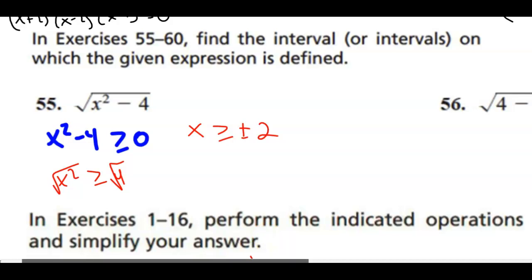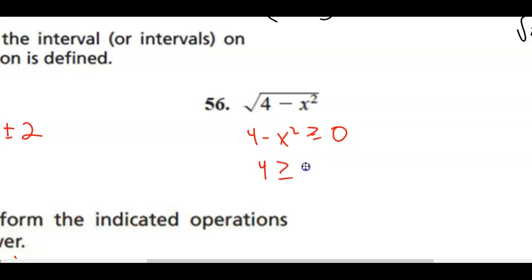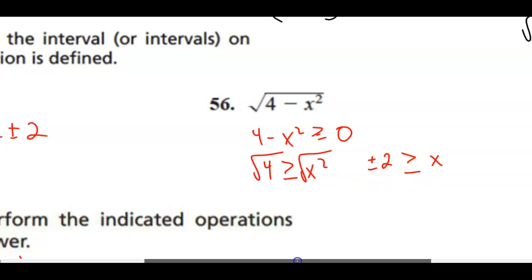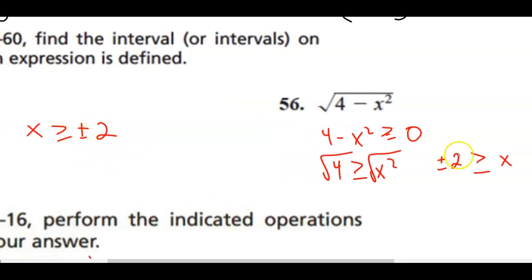For the next domain problem, take the binomial under the radical and set it greater than or equal to zero. Adding x squared to both sides gives 4 is greater than or equal to x squared. Taking the square root of both sides: plus or minus 2 is greater than or equal to x. So x is less than or equal to 2 and x is greater than or equal to negative 2.